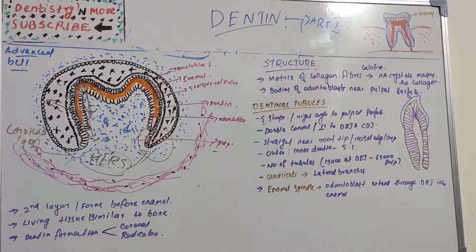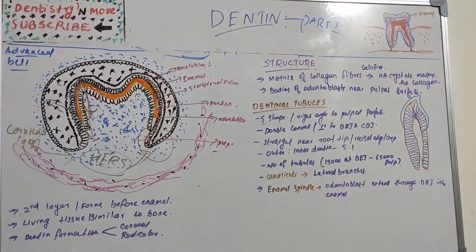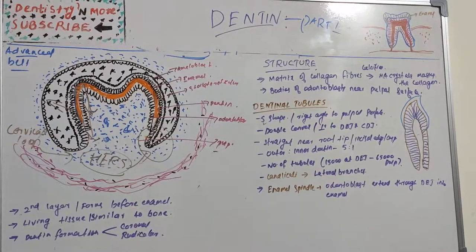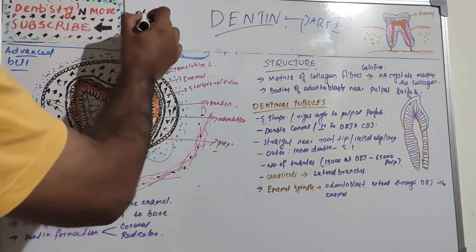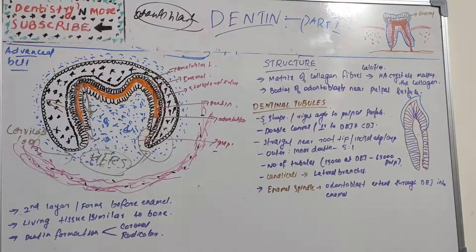Dentine is the hard structure of the tooth, just like enamel, and physically and chemically it closely resembles bone. It is said to be a living tissue, whereas enamel is not. Dentine is a living tissue since the tubules present in it contain processes of specialized cells called odontoblasts.